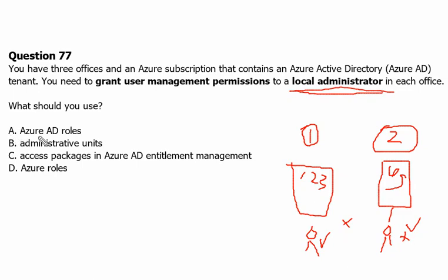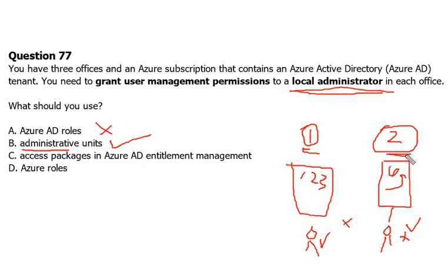Option A is Azure Active Directory roles. Azure AD roles are used to manage Azure AD resources in a directory, but we cannot have segregation on them — we cannot separate resources that way, so this is not applicable. Option B is administrative units. An administrative unit is an Azure directory resource that can be a container for other Azure AD resources. An administrative unit can contain only users, groups, and devices — therefore, this is the correct answer.